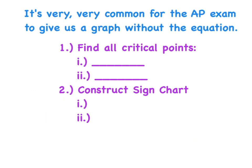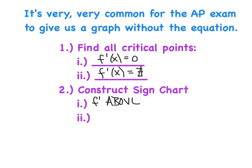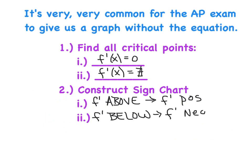It's very common for the AP exam to give us a graph without the actual equation attached to it. So the first thing is we're going to find all the critical points — that's a two-step process. First, we ask when is f' equal to zero, which identifies all of f's horizontal tangents. But we also have to ask when is f' undefined, and that will sometimes come into play in a major way. Then we construct a sign chart. Whenever the graph of f' is above the x-axis, the value of f' is positive. Whenever f' is below the x-axis, the value of f' is negative, and we use that to make our sign chart.